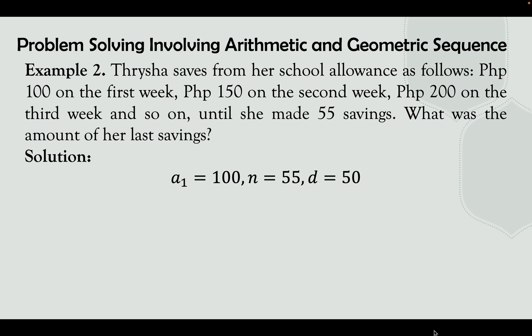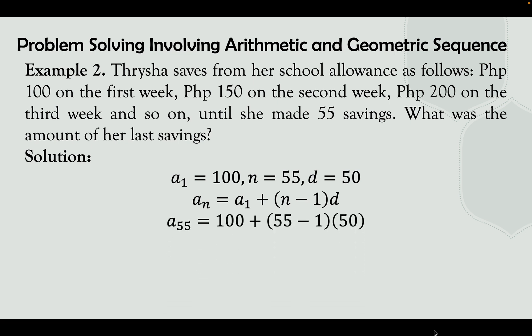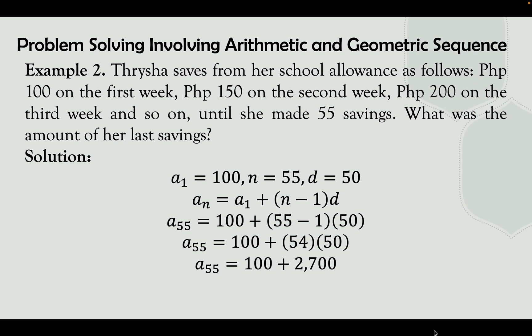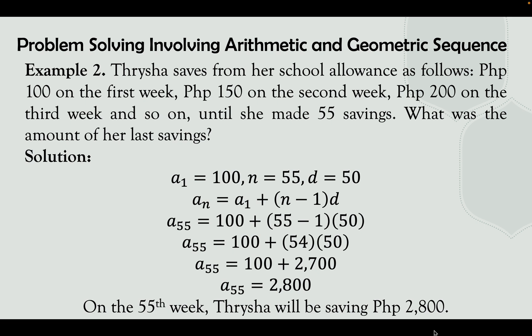Substituting into the arithmetic sequence formula: a sub n equals a sub 1 plus (n minus 1) times d. We have a sub 55 equals 100 plus (55 minus 1) times 50. Simplifying: 55 minus 1 equals 54, and 54 times 50 equals 2,700. So 100 plus 2,700 gives a sub 55 equals 2,800. On the 55th week, Trisha will be saving 2,800 pesos.